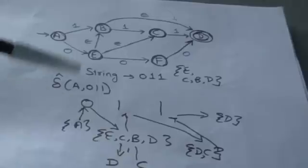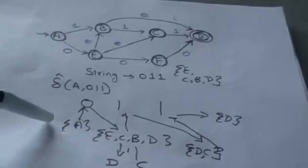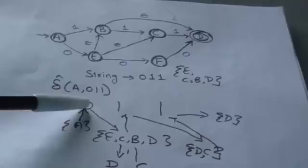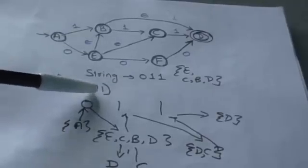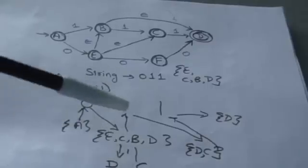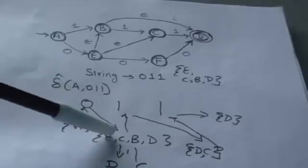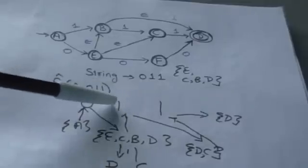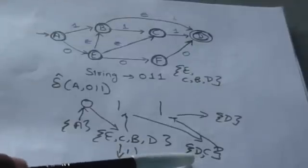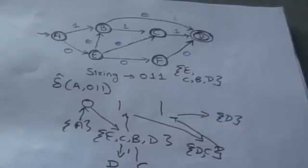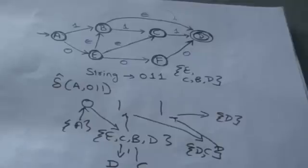So this is the working of the extended transition function for a string of input symbols. First, find the epsilon closure of the current state, apply the symbol, and whatever output you get, apply the epsilon closure on that set. Then apply the second input symbol, again apply epsilon closure on the output. Before reading any input symbol, apply epsilon closure on the state, and after the last symbol, apply epsilon closure on the output set as well.